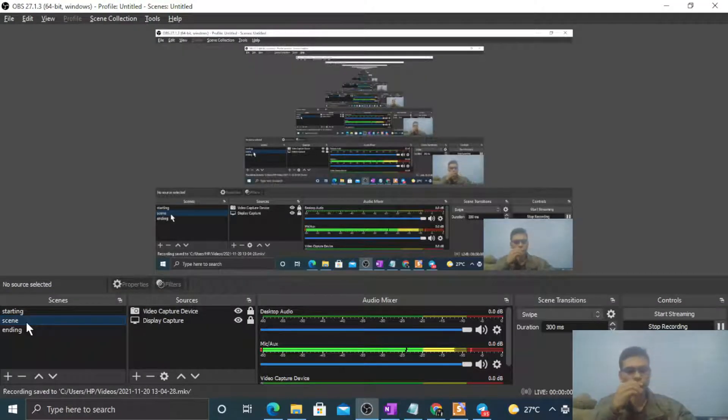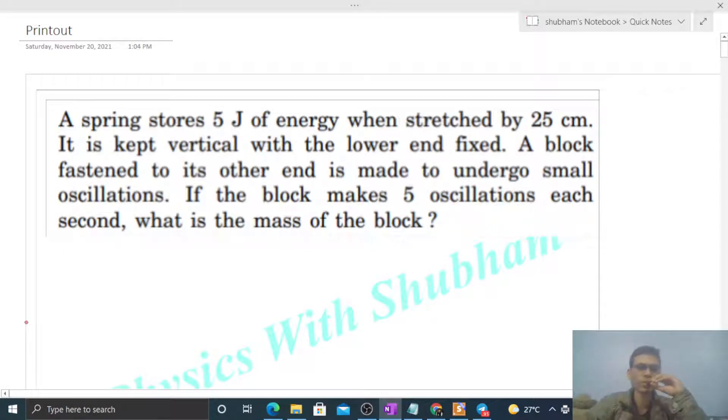Okay, hi everyone. Today let's discuss one interesting problem. It says a spring stores 5 joules of energy when stretched by 25 centimeters. It is kept vertical with the lower end fixed. A block fastened to its other end is made to undergo small oscillations. If the block makes 5 oscillations each second, what is the mass of the block? So what is given?